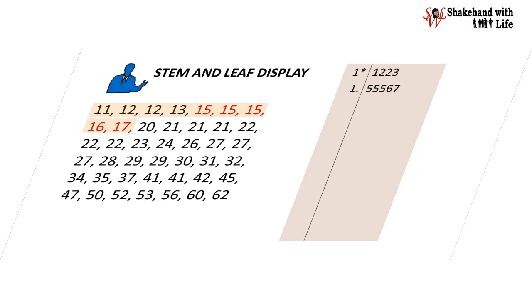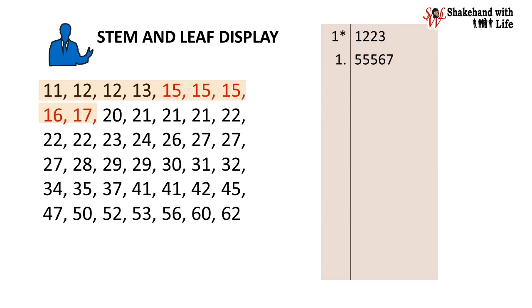So our refined stem and leaf display for the given data will come out as: For stem 1 star the leaf is 1223. For stem 1 dot leaf is 55567. For stem 2 star leaf is 01112223, 4.